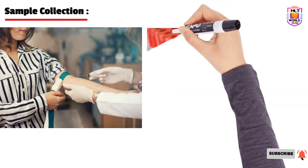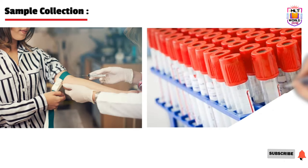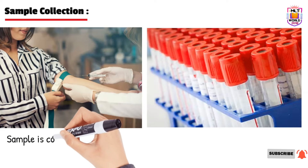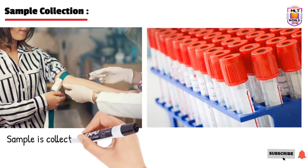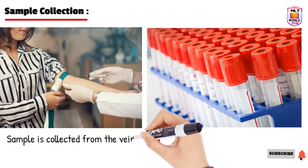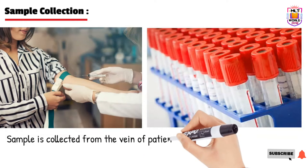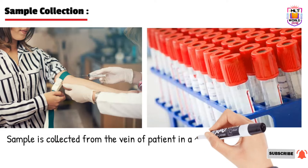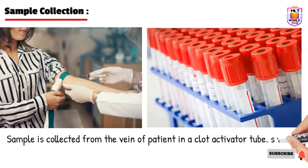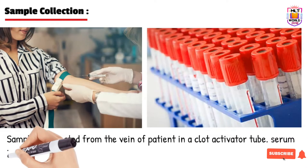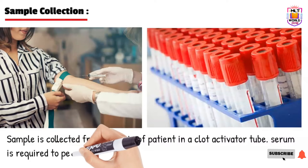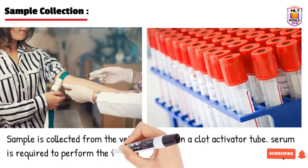ALT is a blood test, so a blood sample is required. The sample is collected from the vein of the patient in a clot-activated tube — red cap or yellow cap. This tube is then centrifuged, and the test is performed on the serum.